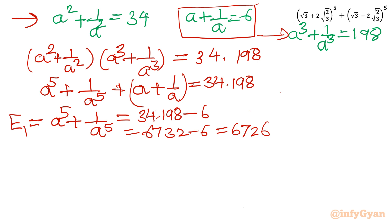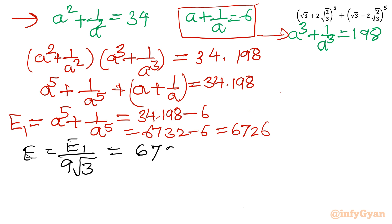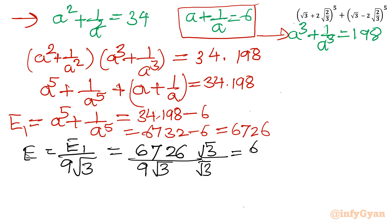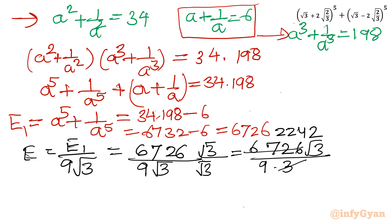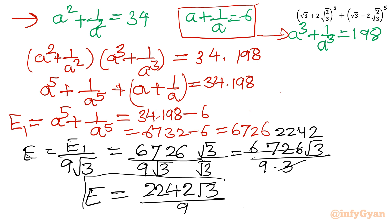Now E = E1/(9√3) = 6726/(9√3). Multiplying numerator and denominator by √3 gives 6726√3/27. Simplifying 6726/27 = 2242, so E = 2242√3/9. This is the same as Method 1.